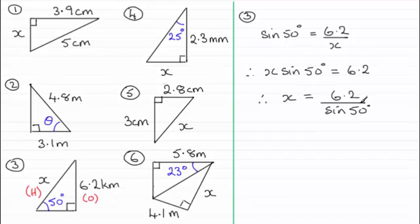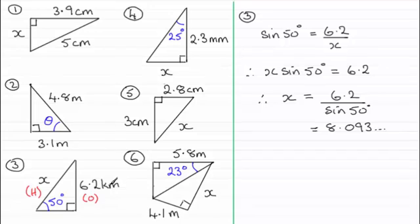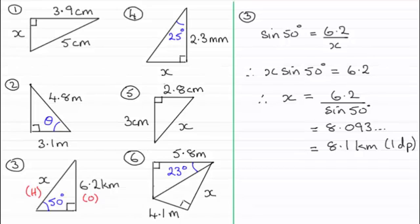Make sure your calculator is in degrees mode — you should get 8.093... kilometres. To one decimal place that's 8.1 kilometres. That's question three done.